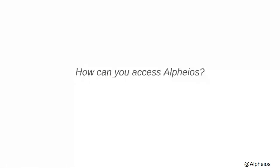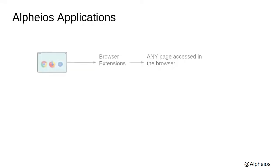So those are the basics of the Alpheus functionality. Let's talk now about how you can access it. Alpheus functionality can be brought to an online text in a number of different ways. One approach is to use the Alpheus browser extensions, which, when added to your Chrome, Firefox, or Safari browser, enable all of the Alpheus features in any text you can read in your browser.